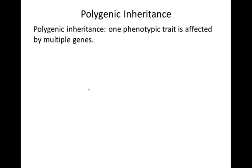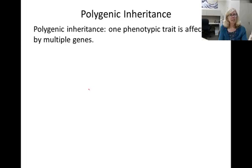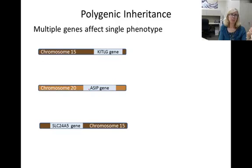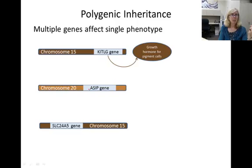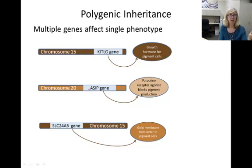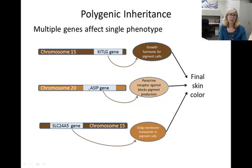Lastly, let's talk about polygenic inheritance. Many phenotypic traits are not simply binary but have a range of values, and human skin color is an example. One reason that many phenotypes are possible is that many genes with different alleles code for this single trait — this is called polygenic inheritance. One gene activates a growth hormone to make pigment cells, another gene codes for a molecule that blocks a receptor preventing the cell from making pigment, and a third gene codes for a transporter in the Golgi membrane important for pigment formation. All three of these genes have different alleles working together to affect final skin color, and there are even more genes involved.